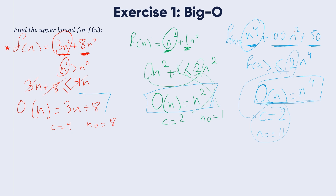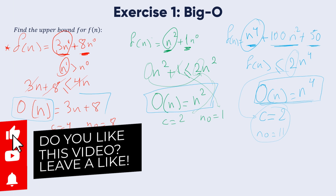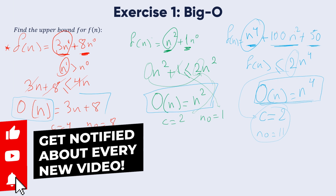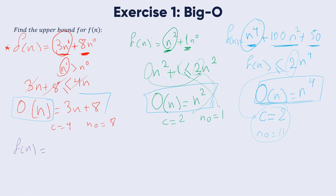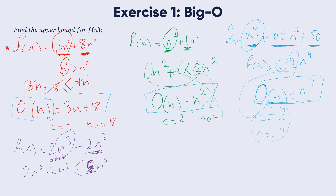Another example: consider f of n equal to 2n cubed minus 2n squared. We have two terms; the highest term is n cubed. Since 2n cubed is being decreased by minus 2n squared, this function is less than or equal to 2n cubed — we don't need to add extra here.